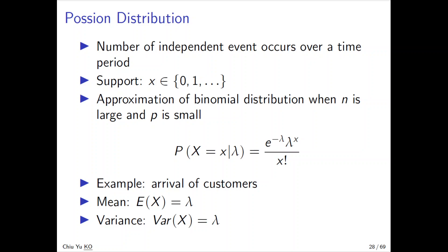So we want to talk about Poisson distribution. As you will see, this is related to the limiting case of a binomial and also related to the exponential distribution. The easiest thing to consider is a number of independent events across a time period. It's very similar to the idea of a binomial, especially when n is large and p is very small.